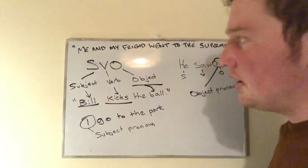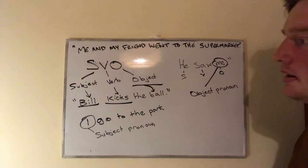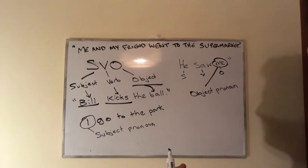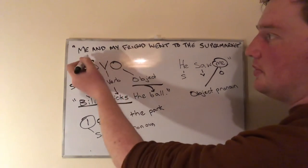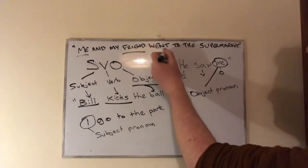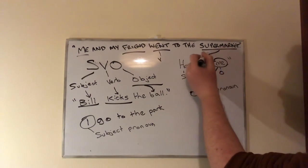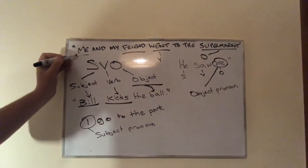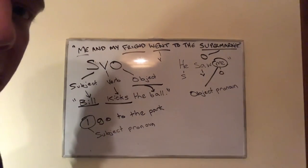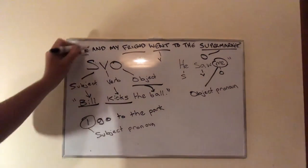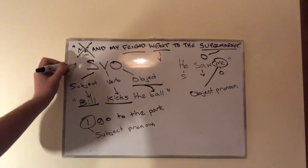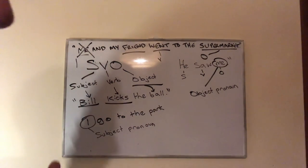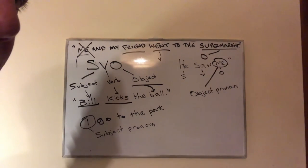Let's return to our original sentence: 'Me and my friend went to the supermarket.' If we consider subject, verb, and object — the subject would be me and the friend, the verb would be went, and the object would be the supermarket. Me is our subject, but an object pronoun has been used, which means it's a mistake. We should instead use the subject pronoun I.